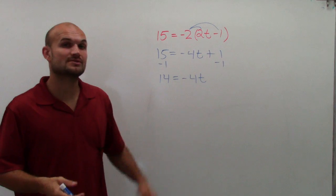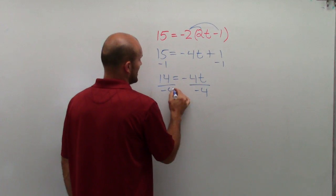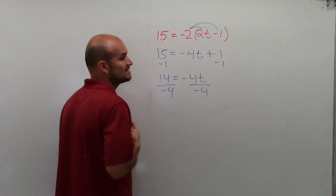Now, after having 14 equals a negative 4t, the next thing I'm going to do is divide by a negative 4 on both sides. And therefore, as me as a math teacher, I prefer to keep it this way. We can write it as a decimal,